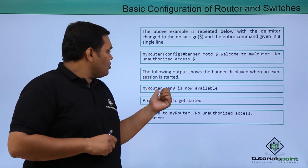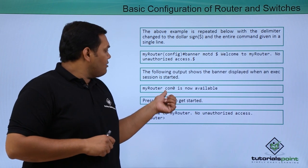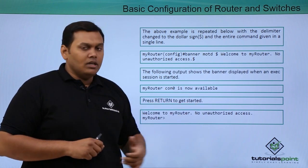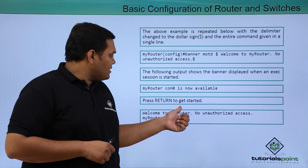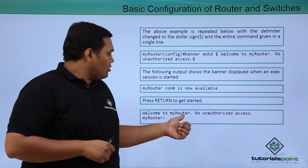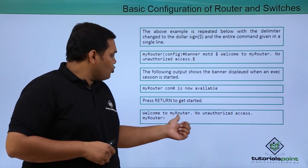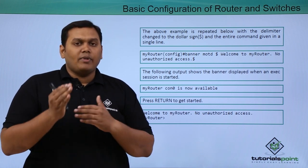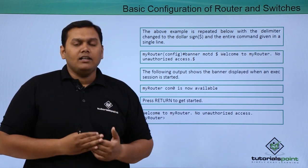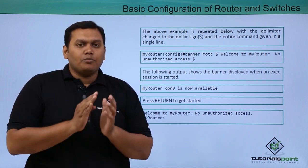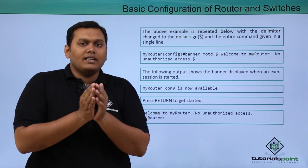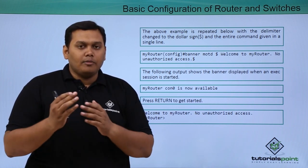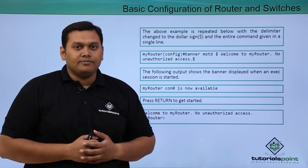The following output shows, and you can also give a message like 'console 0 is now available', so that whenever someone tries to access your router they get the message 'welcome to my router no unauthorized access'. By this we can display the banner for the person accessing. We will be discussing how to create passwords in the next video. Thank you.